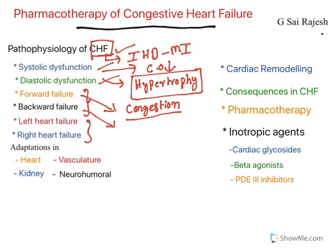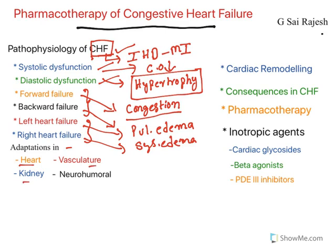Left heart failure results in pulmonary edema, causing dyspnea and orthopnea. Whereas right heart failure results in systemic or peripheral edema and ascites. All these changes result in adaptations in certain tissues like the heart, kidney, and vasculature, and neurohumoral changes also occur. These neurohumoral changes include increased sympathetic nervous system stimulation as well as renin-angiotensin-aldosterone system activation, all of which further aggravate the heart failure condition.